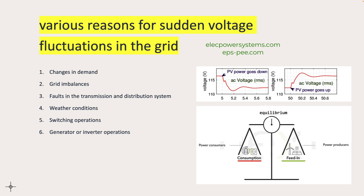Switching operations within the grid, such as connecting or disconnecting power sources, can introduce transient voltage fluctuations. The sudden changes in the network configuration can affect voltage levels temporarily. Additionally, the operation of generators or inverters connected to the grid can also cause voltage fluctuations. Sudden changes in generator output or inverter behavior, such as tripping or load switching, can impact the voltage on the grid.